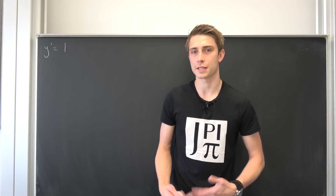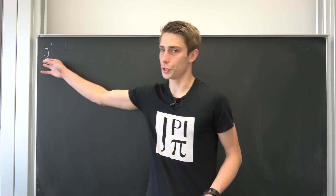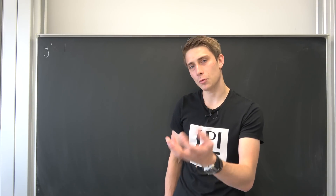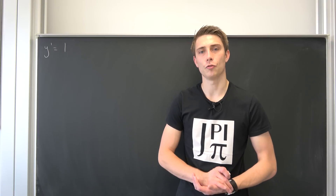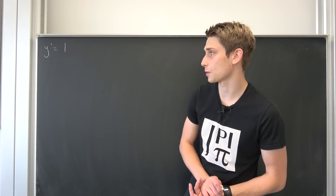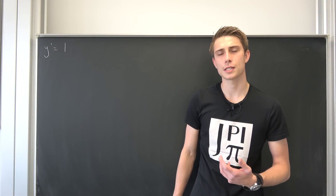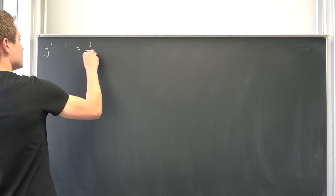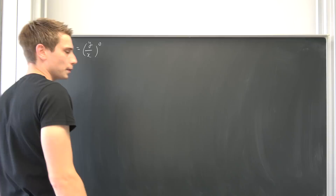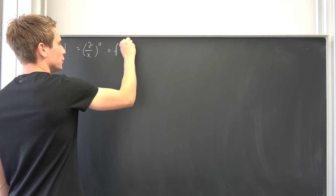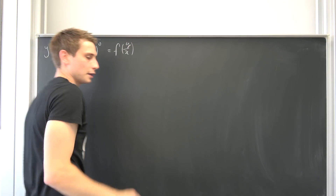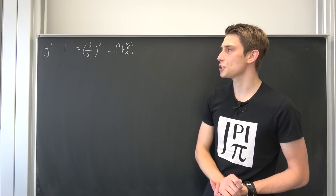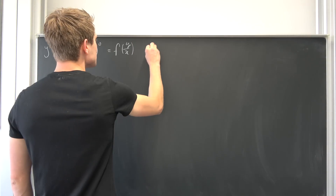For the last method, let's take a look at the original expression y prime equals 1. I would like to show you an application of Euler homogeneous differential equations, because if you take a closer look: the value 1 is nothing but y over x to the zero power, i.e., a function of y over x. So this is exactly a function of y over x if you look closely.